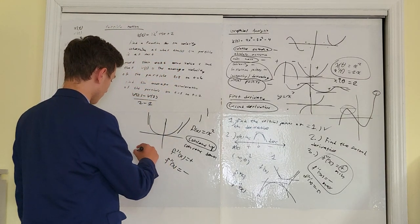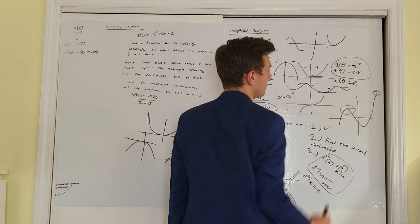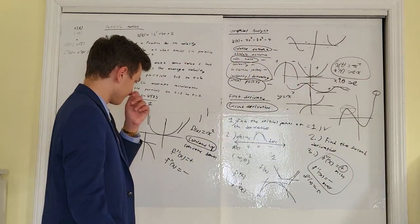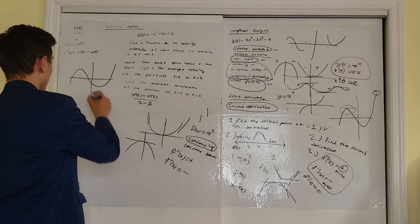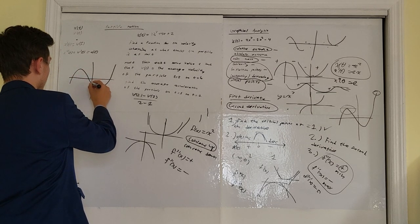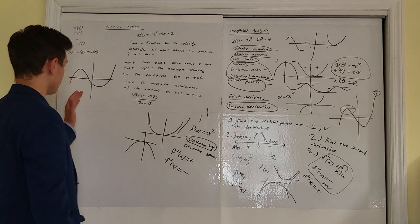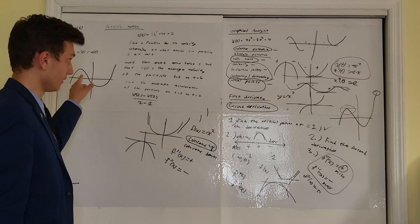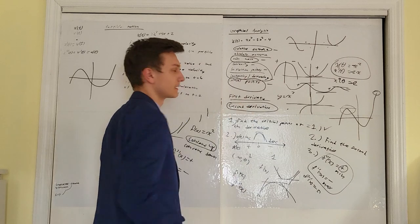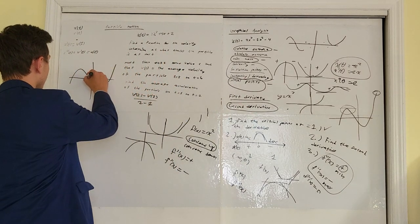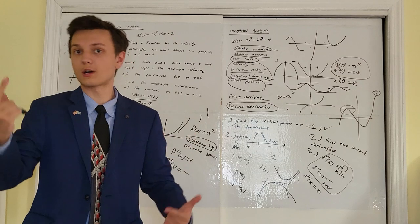A concave down function is where f''(x) is negative — for example, negative x squared. Functions with higher degrees can be concave down for one portion and concave up for another. That brings us to inflection points: an inflection point is the point where something changes from concave up to concave down, or concave down to concave up.